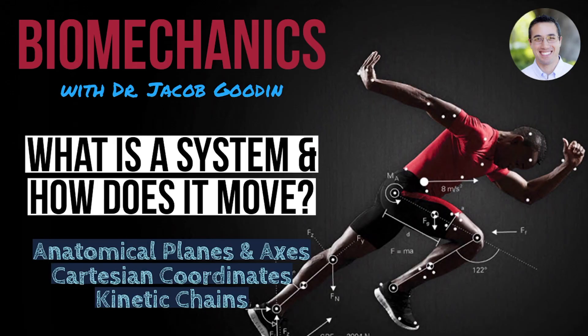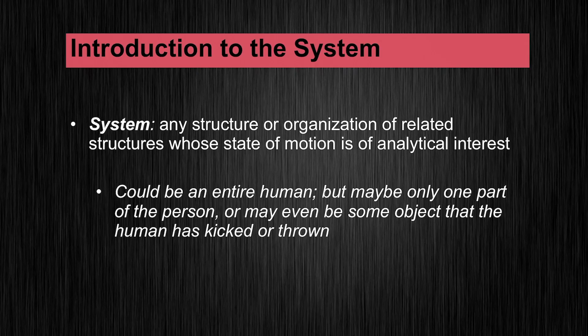So, what is a system? A system is any structure or organization of related structures whose state of motion is of analytical interest to the biomechanist. This structure could be something like a limb, or a segment, or maybe even a joint. And the organization of related structures could refer to a human body — the entire human.